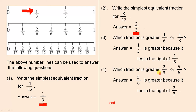Which fraction is greater: 2 over 3 or 5 over 6? Let's see where they are. There is 2 over 3 and there is 5 over 6. The answer is that 5 over 6 is greater because it lies to the right of 2 over 3.